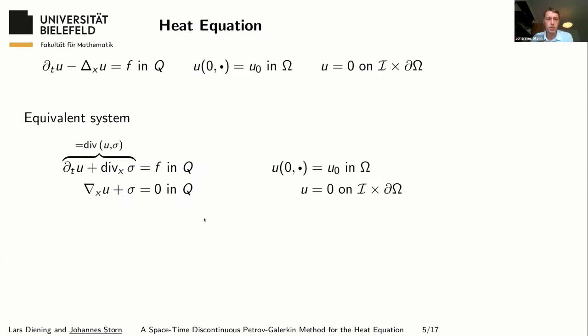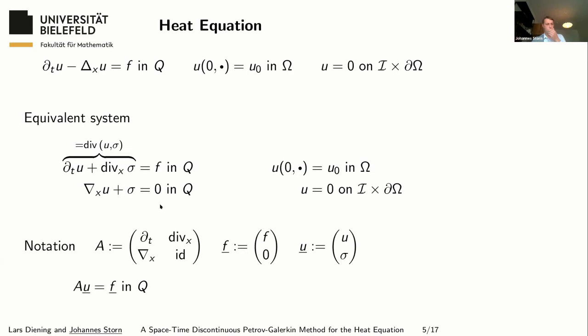Now let me apply this idea to the heat equation. First of all, we want to design a numerical variational problem with a continuous ansatz space. Therefore, we reformulate the second-order system as a first-order system by introducing a new unknown sigma, which equals minus the gradient of u, where x denotes the gradient in space direction. A is an operator or matrix containing all these differential operators, F-bar is a vector containing the right-hand side f and zero, and u-bar is the vector containing u and sigma. Then I can rewrite this system as A of u-bar equals F-bar.